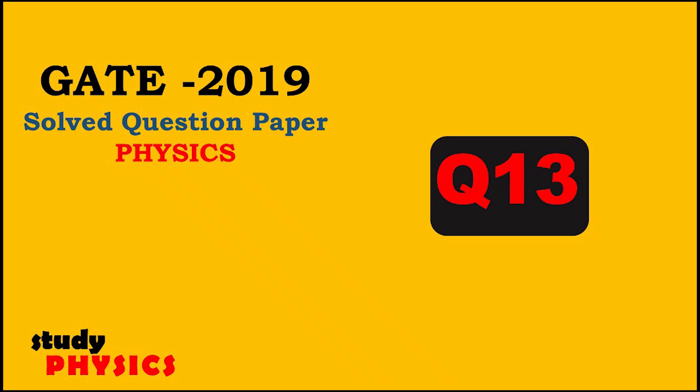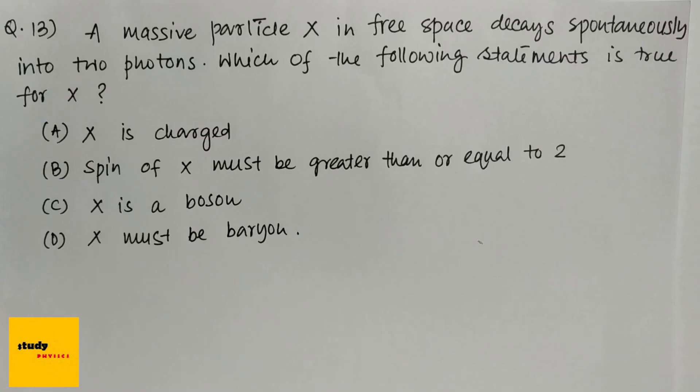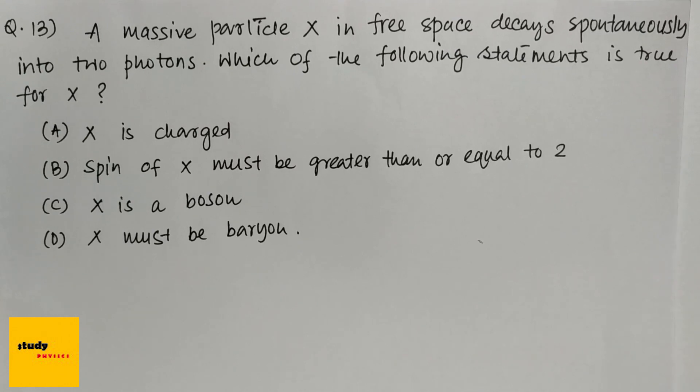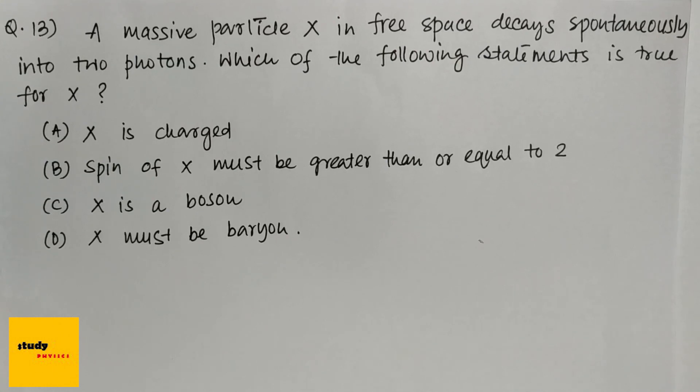Hi everyone, welcome to study physics. Here's question number 13: A massive particle X in free space decays spontaneously into two photons. Which of the following statement is true for X? And these are the four options. Option A is X is charged. Option B is spin of X must be greater than or equal to 2.